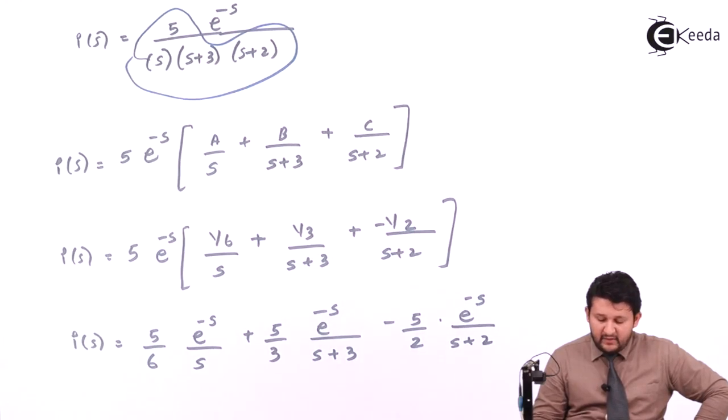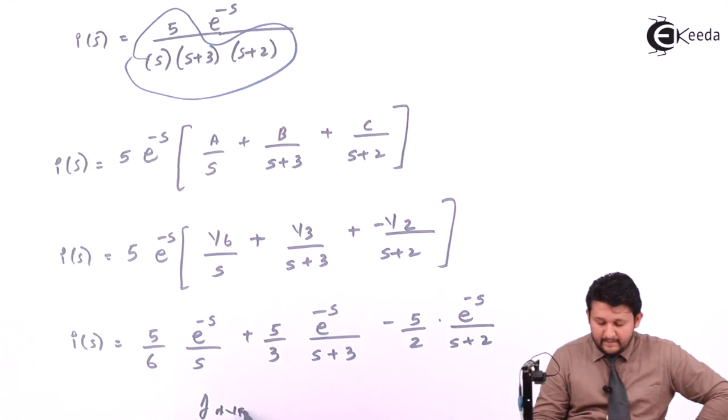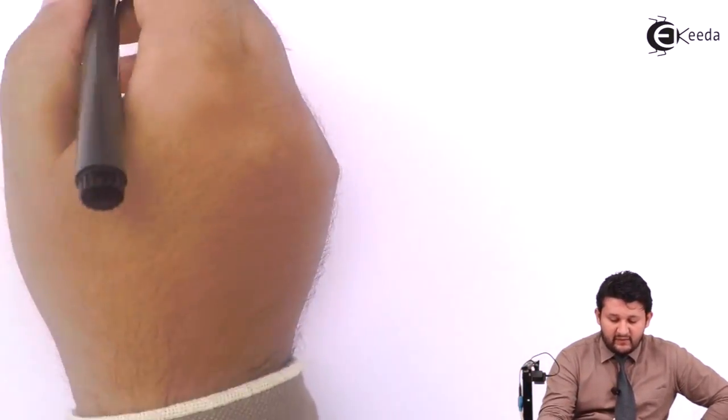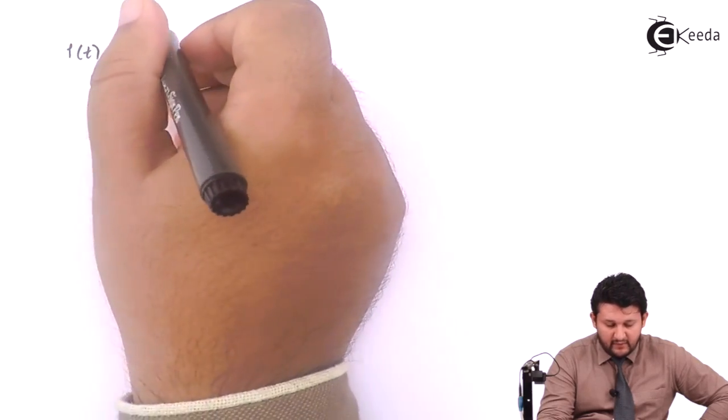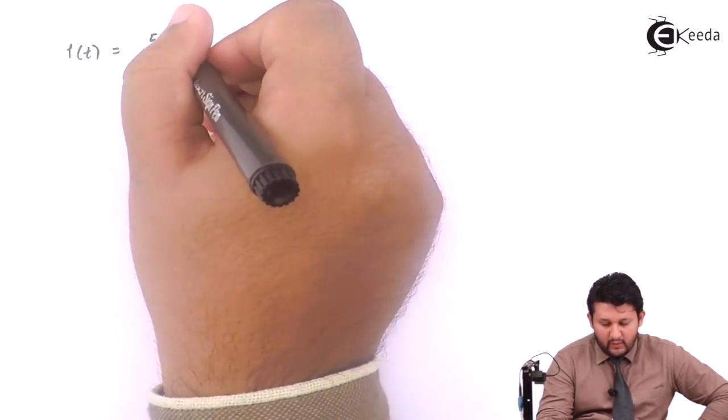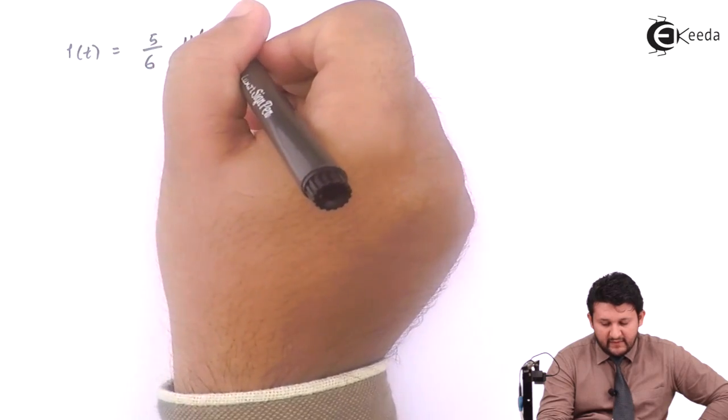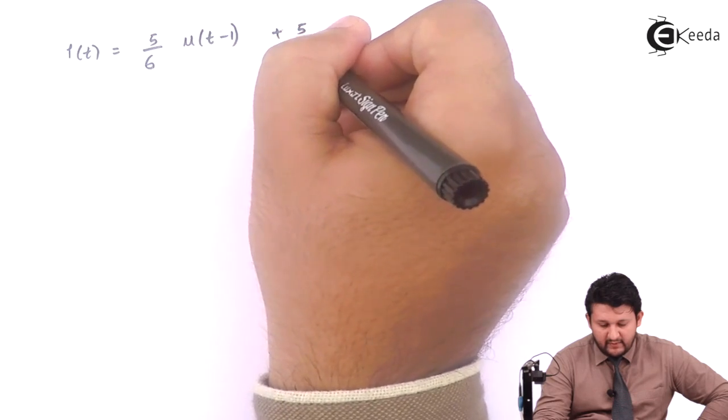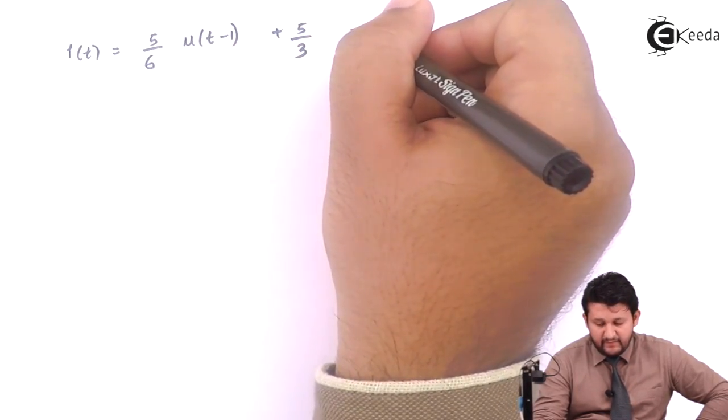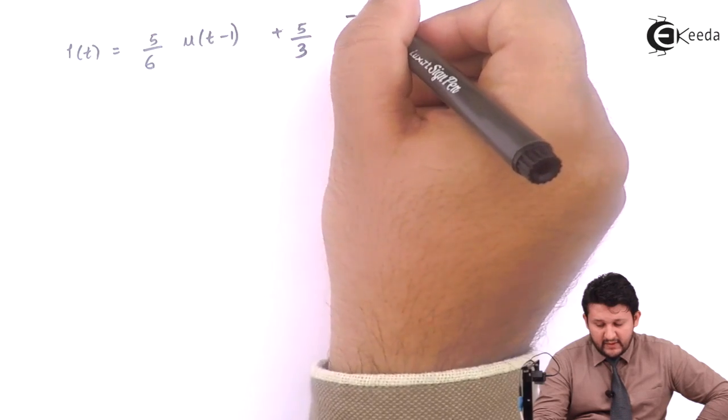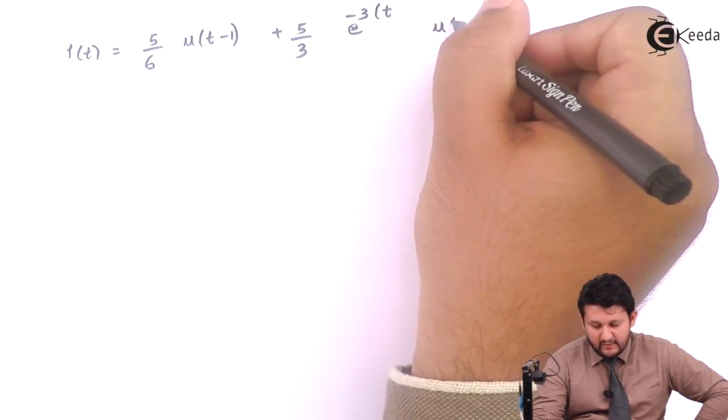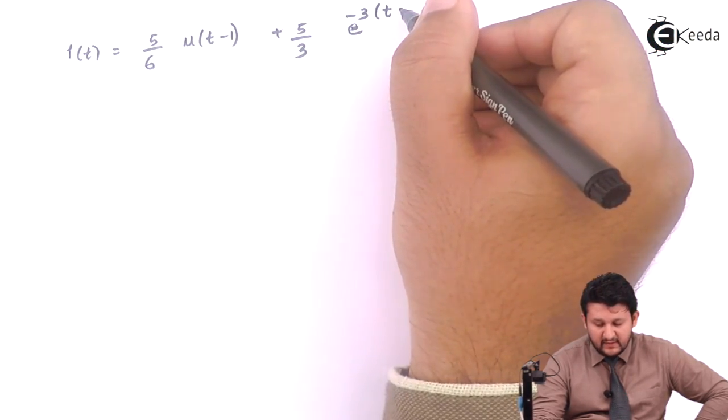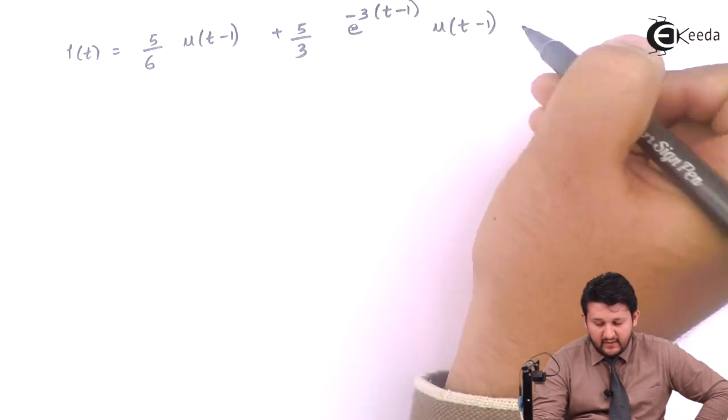So now you will be applying your inverse Laplace for the following equation. You get the equation for I of t. So your I of t will be equal to phi by 6, 1 upon S will be U of t. Since you have exponential, so that is e raise to minus 1 S, that will be t minus 1, plus 5 upon 3. You have 1 upon S plus 3, so plus 3, that will be converted into e raise to minus 3t. 1 upon S will be U of t, and you have exponential in numerator, so that is whenever e raise to minus S, wherever you have t, it will be t minus 1.